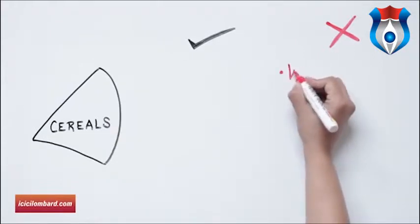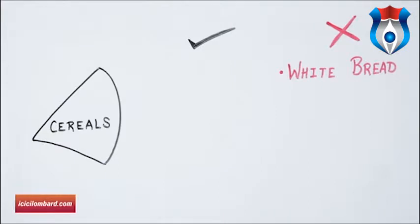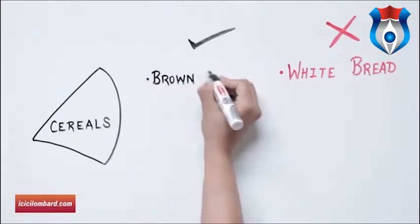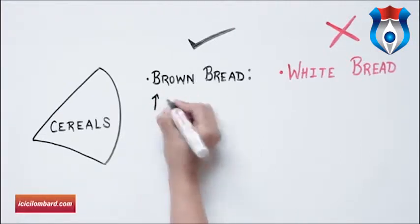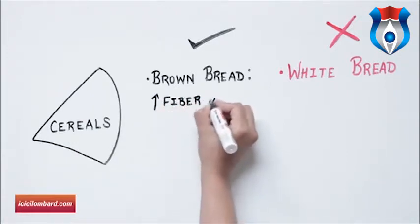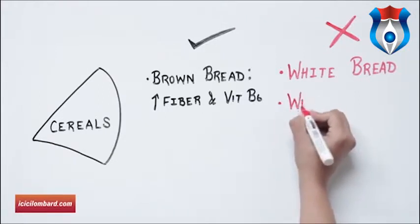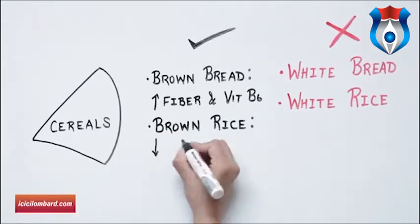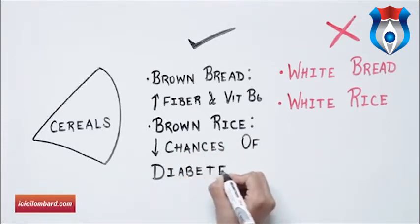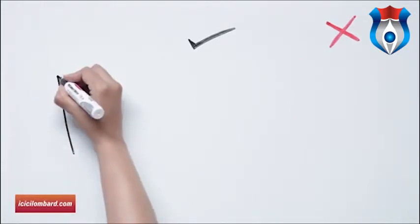For cereals, start by replacing white bread with whole wheat brown bread, which uses all three parts of the wheat ensuring it is high in fiber and vitamin B6. High fiber content aids digestion, makes you feel full and ensures you don't overeat, keeping your weight in check. Also replace white rice with brown rice — having brown rice three times a week drastically reduces the chances of diabetes. Baked chivada and poha are healthy cereal options for midday snacking. Pulses are your best bet for weight loss.